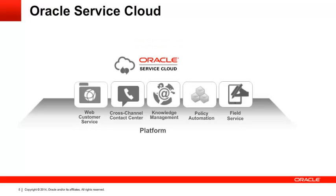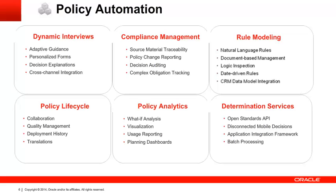What we're talking about today is policy automation, which fits into Oracle's service cloud offering. We've got five pillars underneath the service cloud that we feel are extremely important to all interactions with customers, and policy automation is a strategic aspect of managing those interactions. Policy automation provides adaptive guidance to customers, personalization of interaction through forms, explaining decisions that you're making to them, and integrating across both the web self-service and the call center channels.